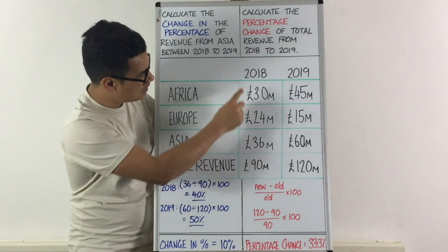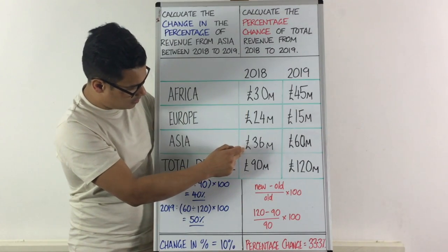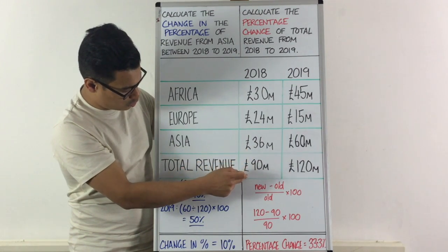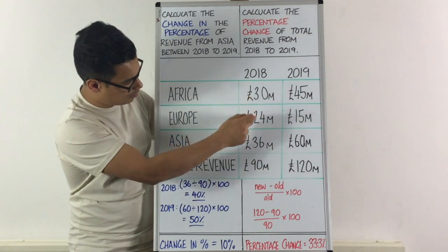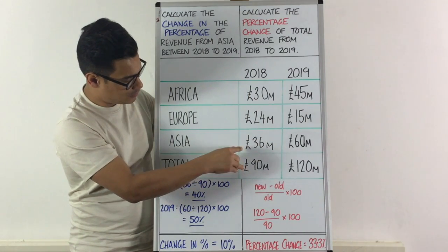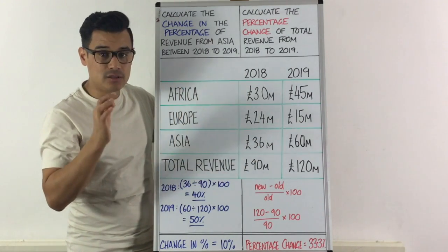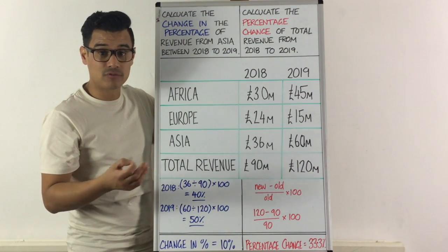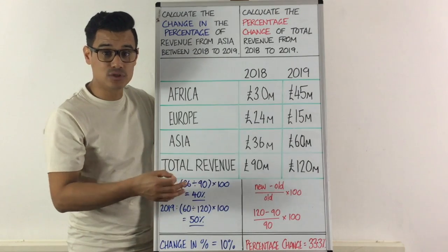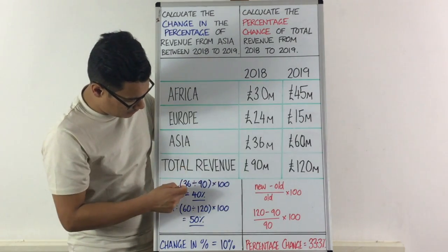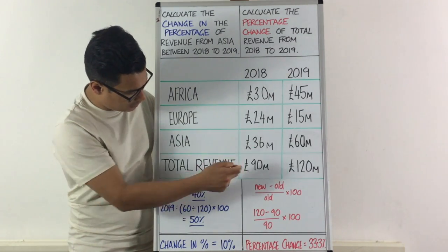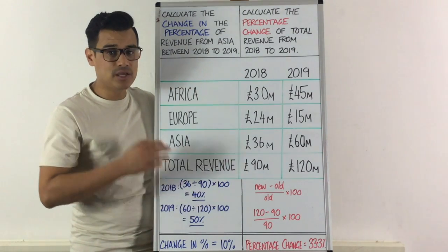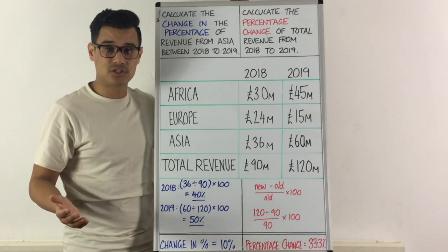We take Asia and we see that in 2018, 36 million came from Asia in terms of revenue. And the total revenue, which is just adding up these three together, was 90 million. So what you need to do when it says change in the percentage is work out the percentage coming from Asia of the revenue in each of the years. So in year one, it's simply 36 divided by 90 times by 100, and that comes to 40%. It's just the same way that you normally calculate percentages.